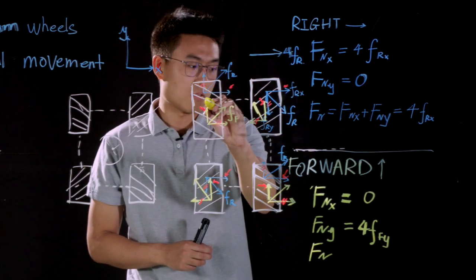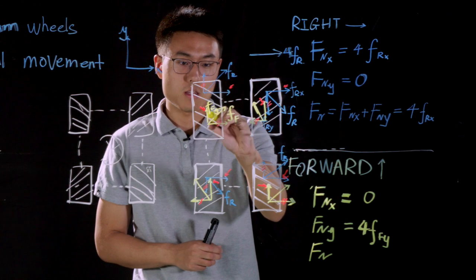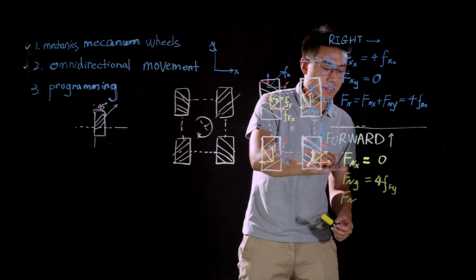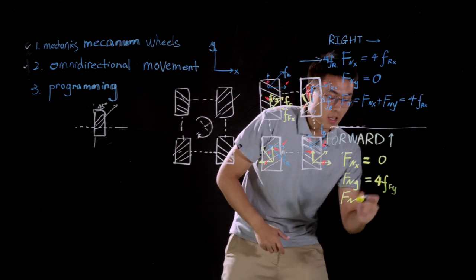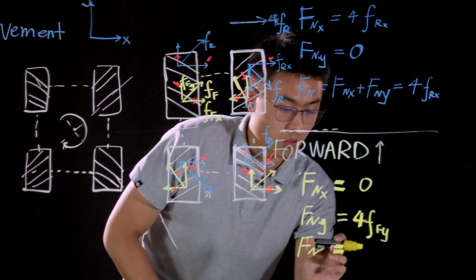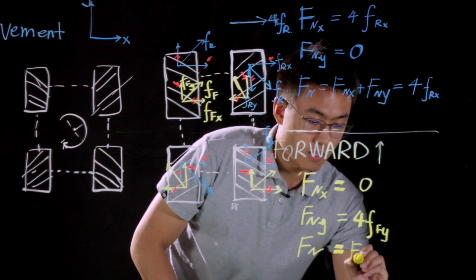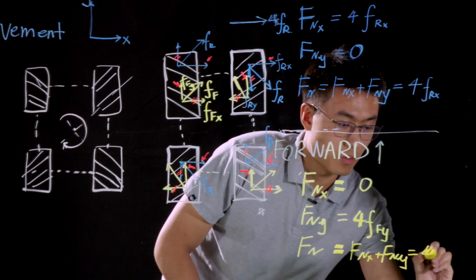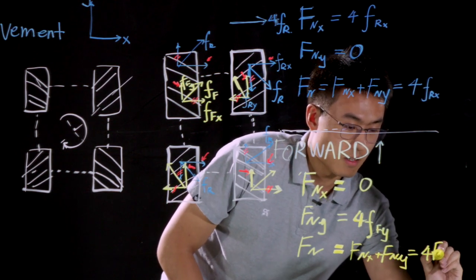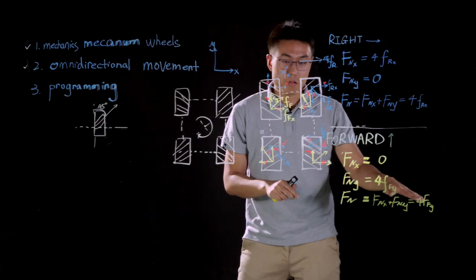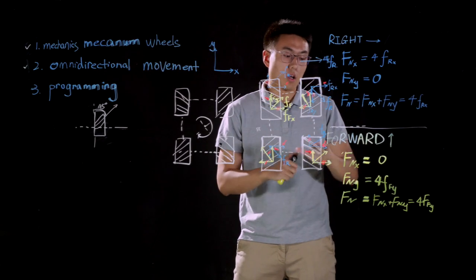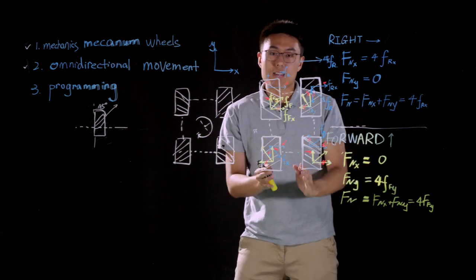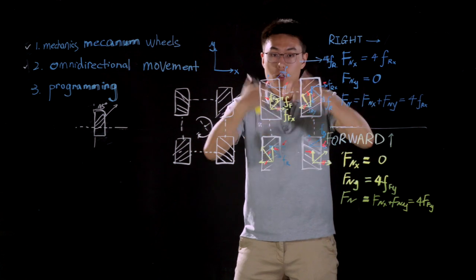So that is FF,Y. And that is FF. So now we have net force on X axis and Y axis respectively. And thus, we can have an overall net force equals to Fnet,X plus Fnet,Y equals to 4FF,Y. And that explains why our S1 can move forward because there is no net force on X axis at all. And we have 4FF,Y on Y axis to drive the S1 to move forward.